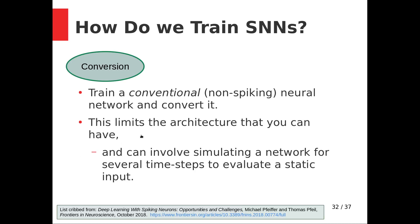Converted networks are not very good at learning temporal codes — they tend to handle rate codes but not temporal codes. That may mean we're throwing away a good part of the representational and computational power our network might have. These approaches can also involve a lot of very bizarre schemes that seem not very efficient and waste a lot of the potential power of a spiking network.